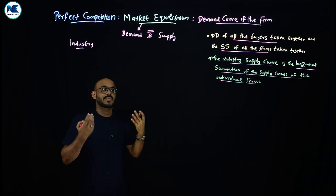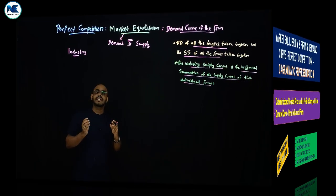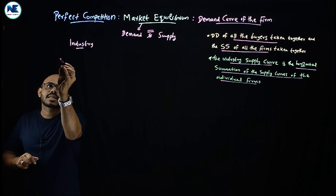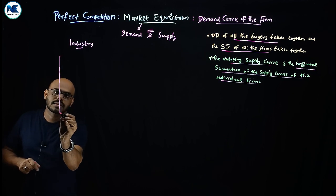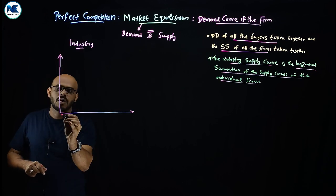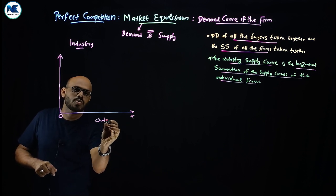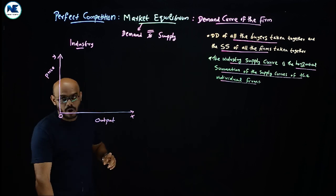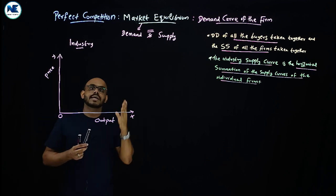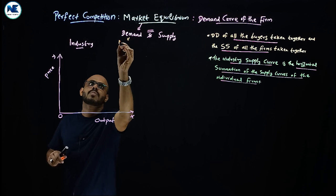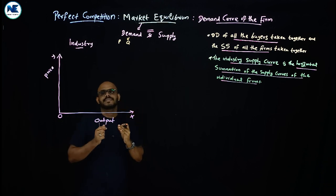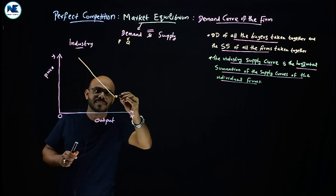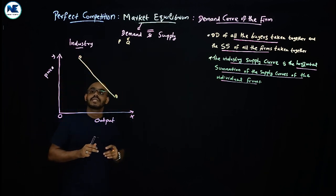Now we can draw the market equilibrium — or industry equilibrium — diagrammatically. On the x-axis we take quantity of output, and on the y-axis we take price. The demand curve of the industry under perfect competition is downward sloping, because demand shows an inverse relationship between price and quantity — as price rises, demand falls.